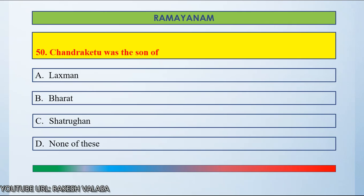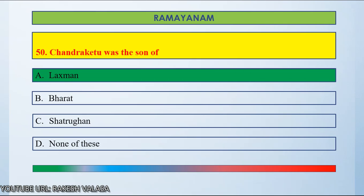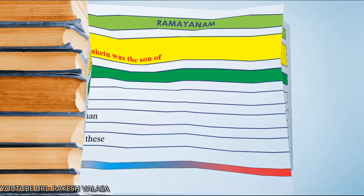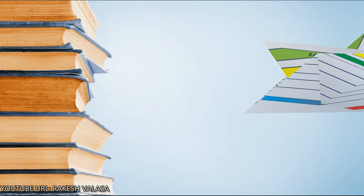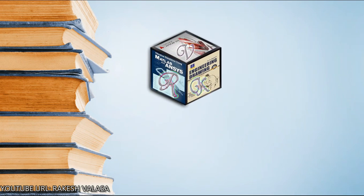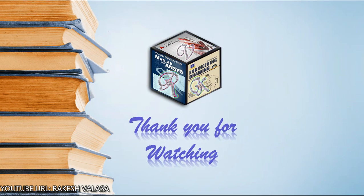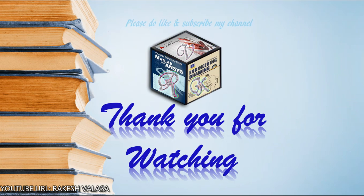Time up. The answer is Lakshman. Lakshman had 2 sons — one is Angada, another one is Chandraketu. Thank you for watching. Please do like and subscribe to the channel for more videos.